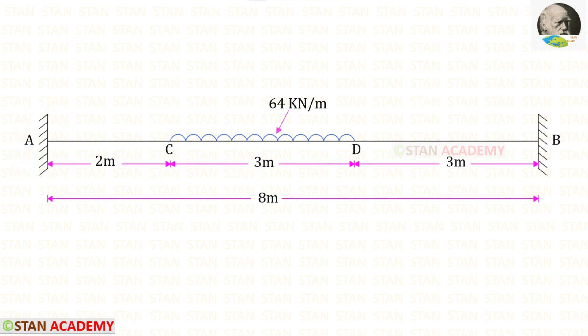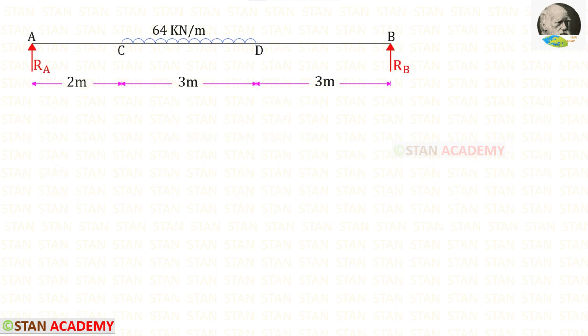In this problem, to find the moments at points A and B, we are going to use the moment area method. In the moment area method, first we have to convert this fixed beam into a simply supported beam. You can see that I have converted the fixed beam into a simply supported beam. In this beam, we have to find the reactions RA and RB.